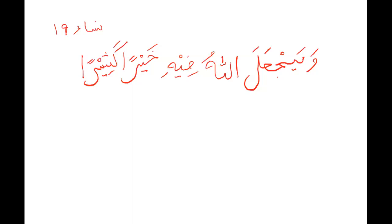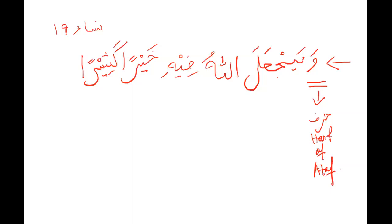Now, here you have — we'll start with waw. What is waw? Is it an ism, fail, or harf? It is a harf, harf of ataf. Excellent. We move on because we know that harf of ataf cannot be chained to anything. So it is by itself here. It is performing something because this is part of the ayah, but we're not going to go into that right now.